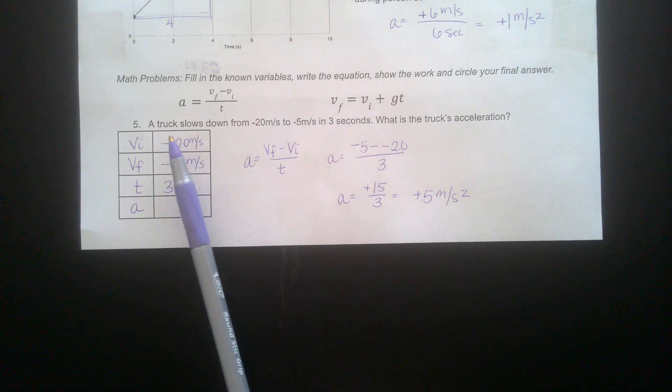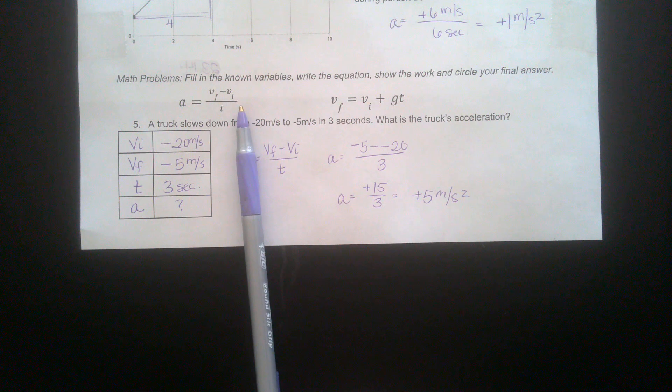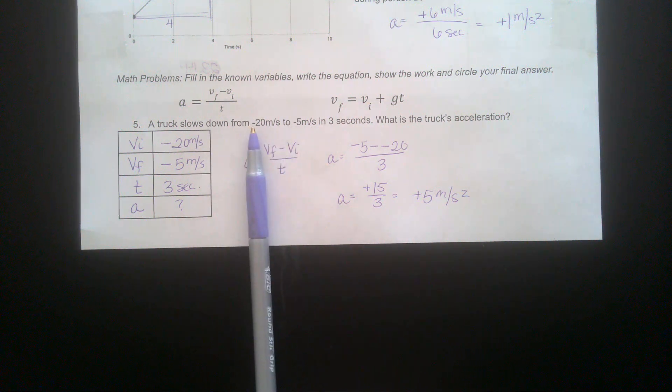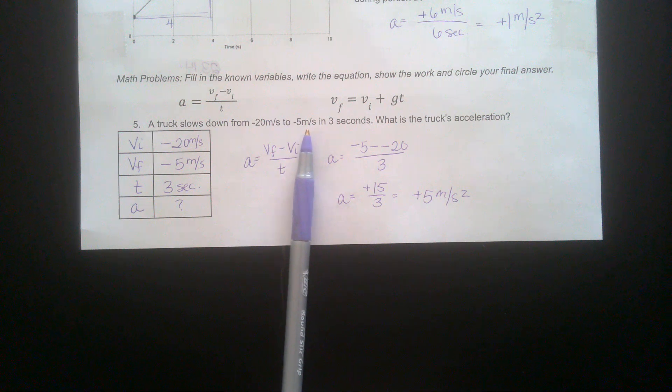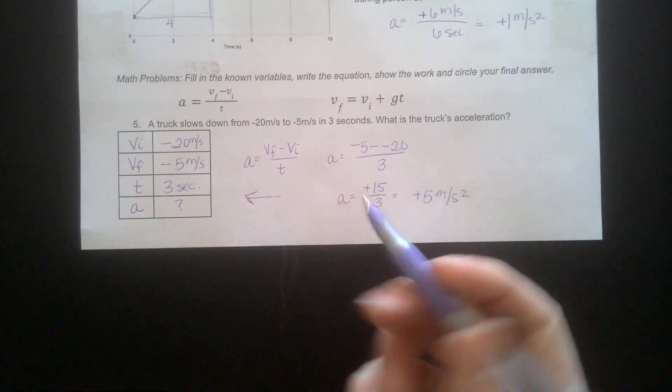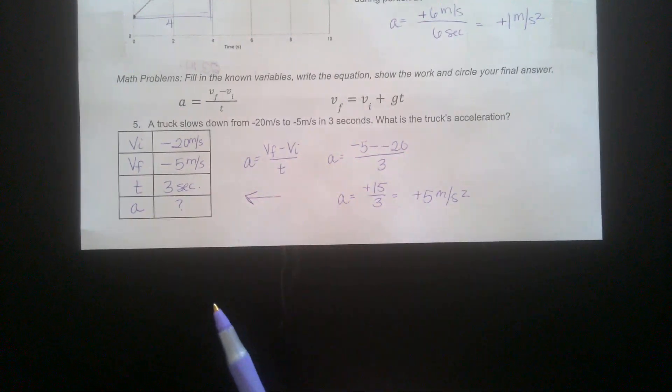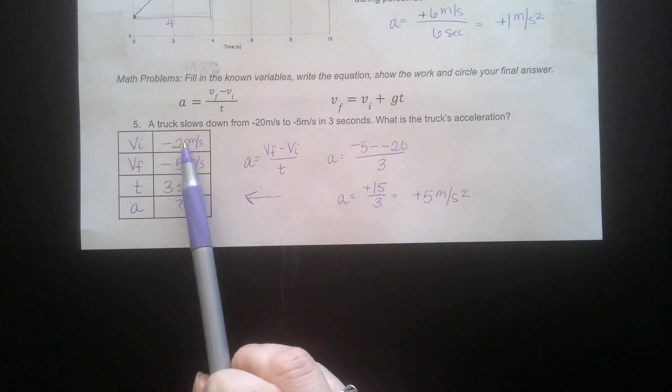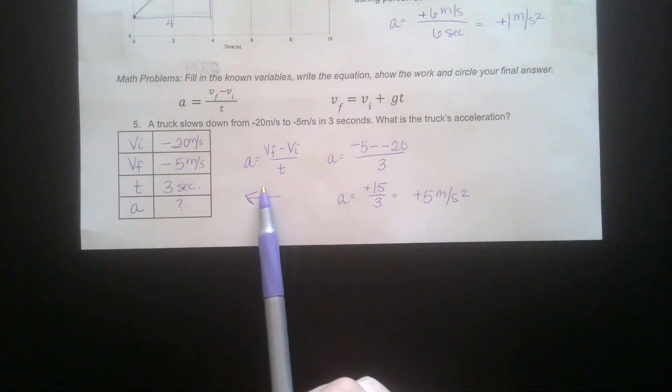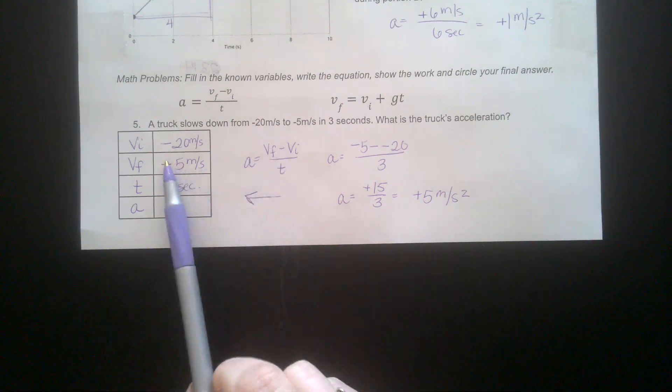On this one, a truck moving on the ground, you're going to use your normal acceleration equation. They give you a VI and a VF, slows from negative 20 meters per second to negative 5. The negative just means the truck is moving in a negative direction, maybe south or west in three seconds. Here are my known values and the equation I'm going to use.